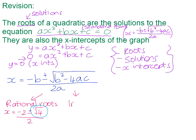The second thing that could happen is we could get irrational roots. That would happen if what was underneath our square root sign was not a perfect square — for example, the square root of 3. It would be irrational because we cannot find the square root of 3, so we would either have to leave our answer in surd form, or convert to a decimal and round it off.